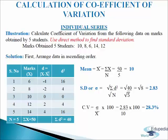We will calculate mean equal to sigma X divided by n, which is 50 divided by 5, giving 10 as mean. In the third column D equals X minus mean: 6 minus 10 gives minus 4; 8 minus 10 gives minus 2; 10 minus 10 gives 0; 12 minus 10 gives 2; 14 minus 10 gives 4. In the last column D squared: minus 4 squared is 16; minus 2 squared is 4; 0 squared is 0; 2 squared is 4; 4 squared is 16.